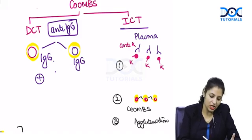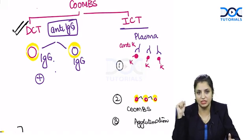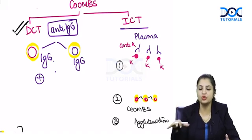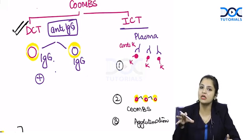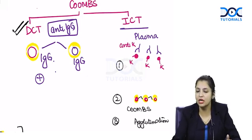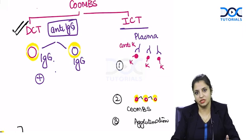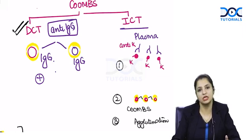For autoimmune hemolytic anemia, we use direct Coombs test. We take the cells, add Coombs reagent, and see if agglutination occurs - if so, it's positive. Whereas indirect Coombs test is basically done in blood banking, and that's called compatibility testing.